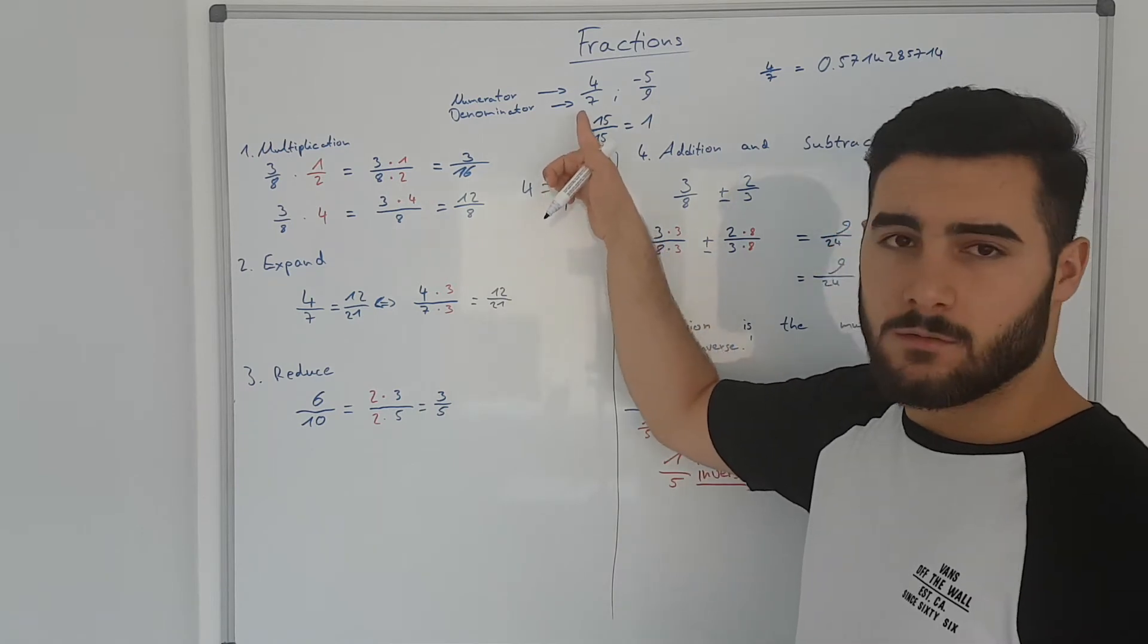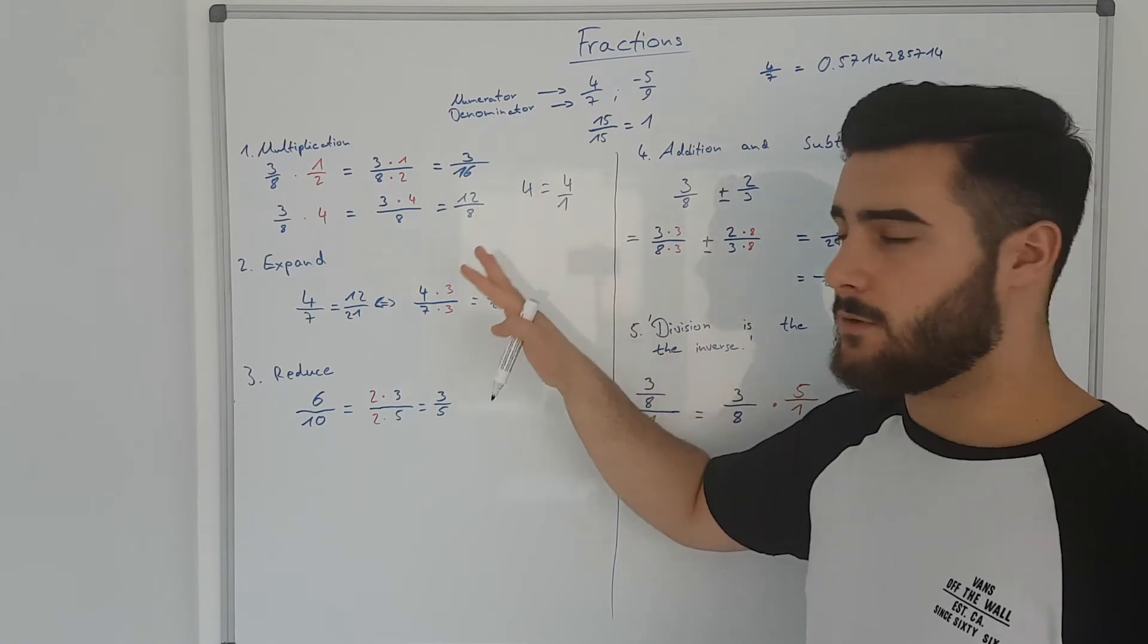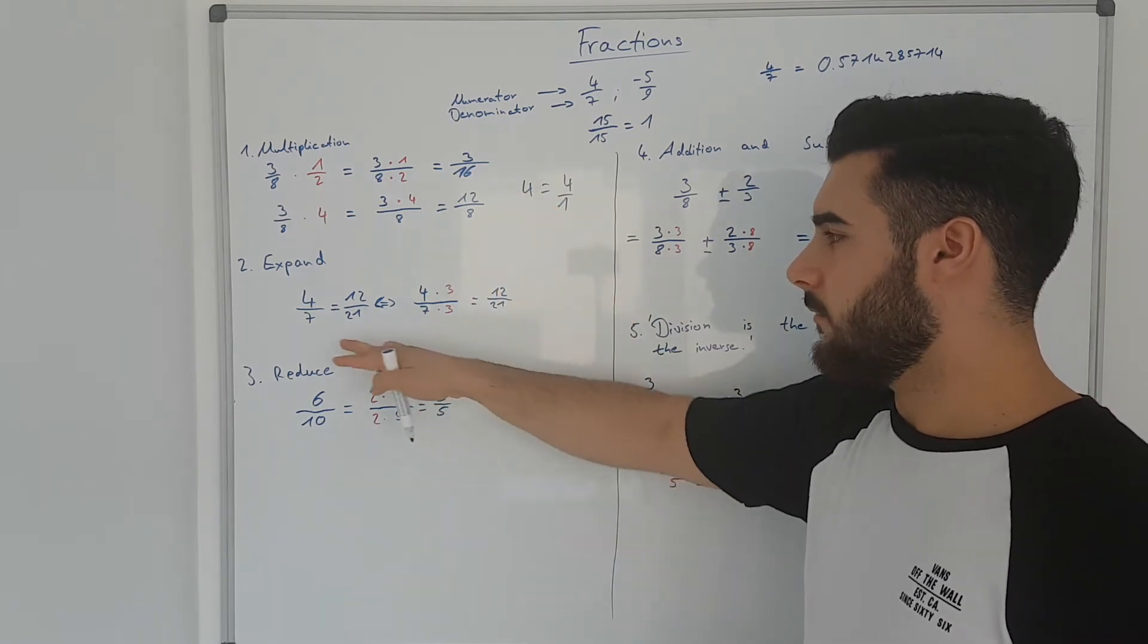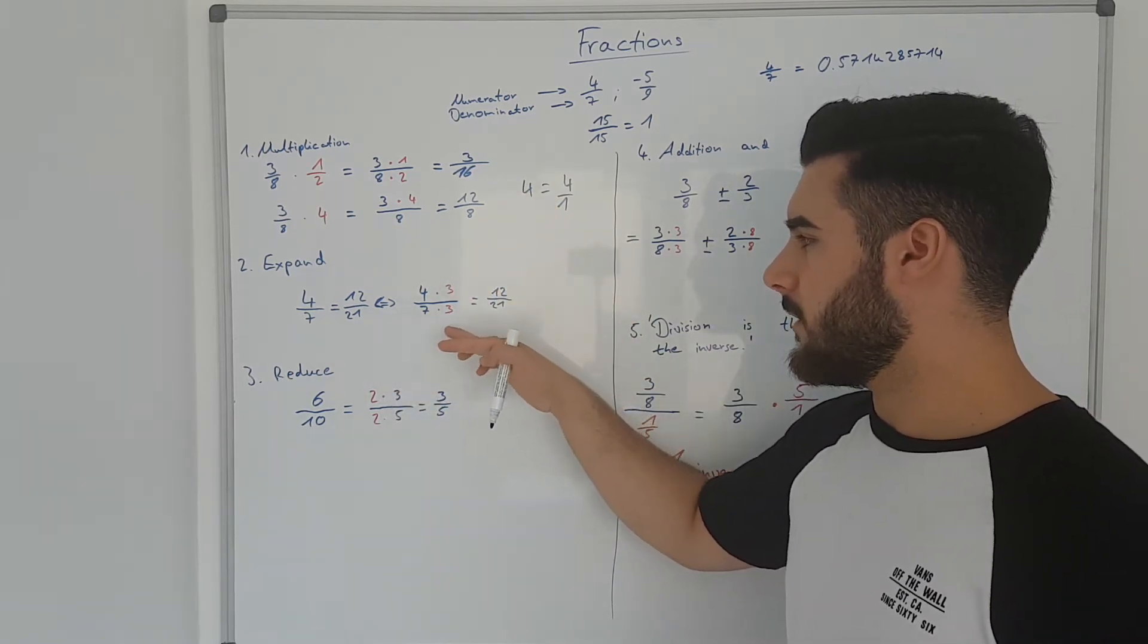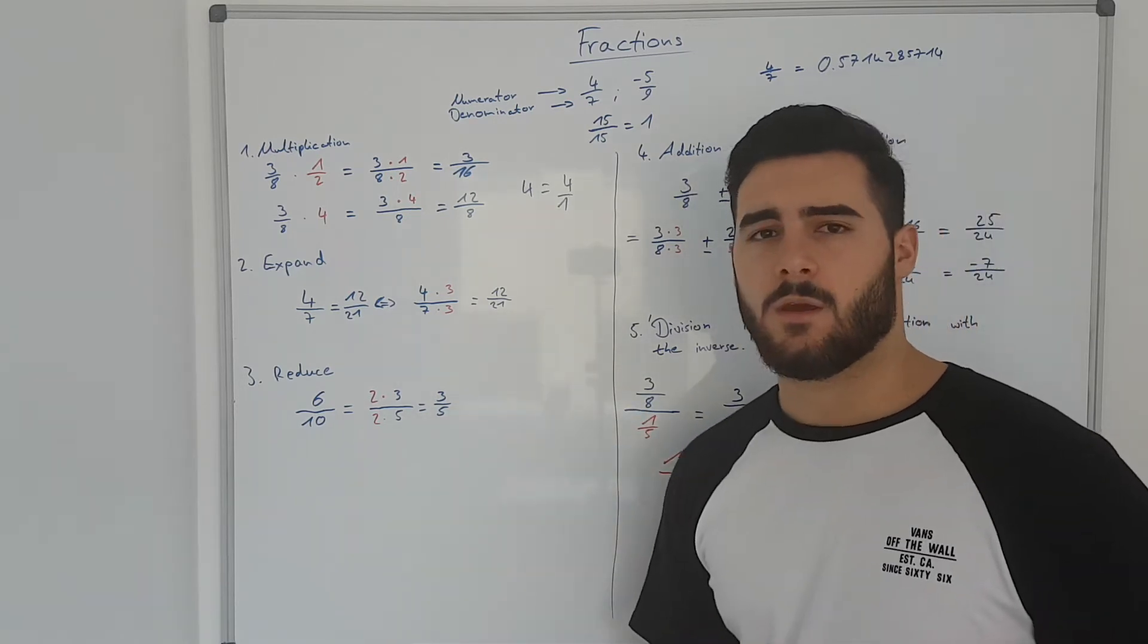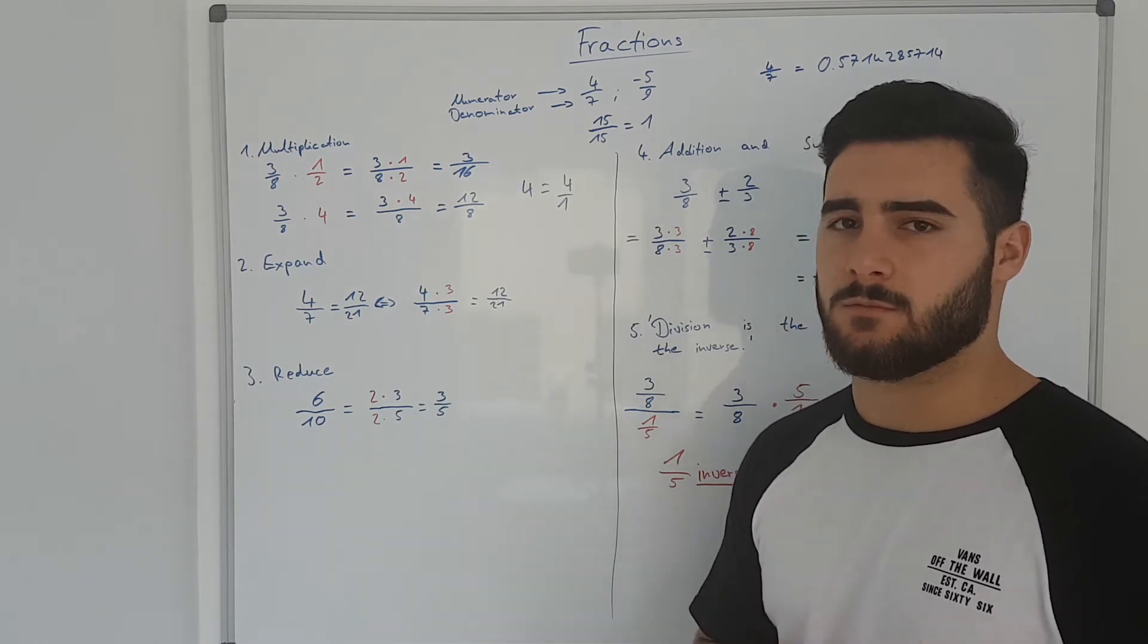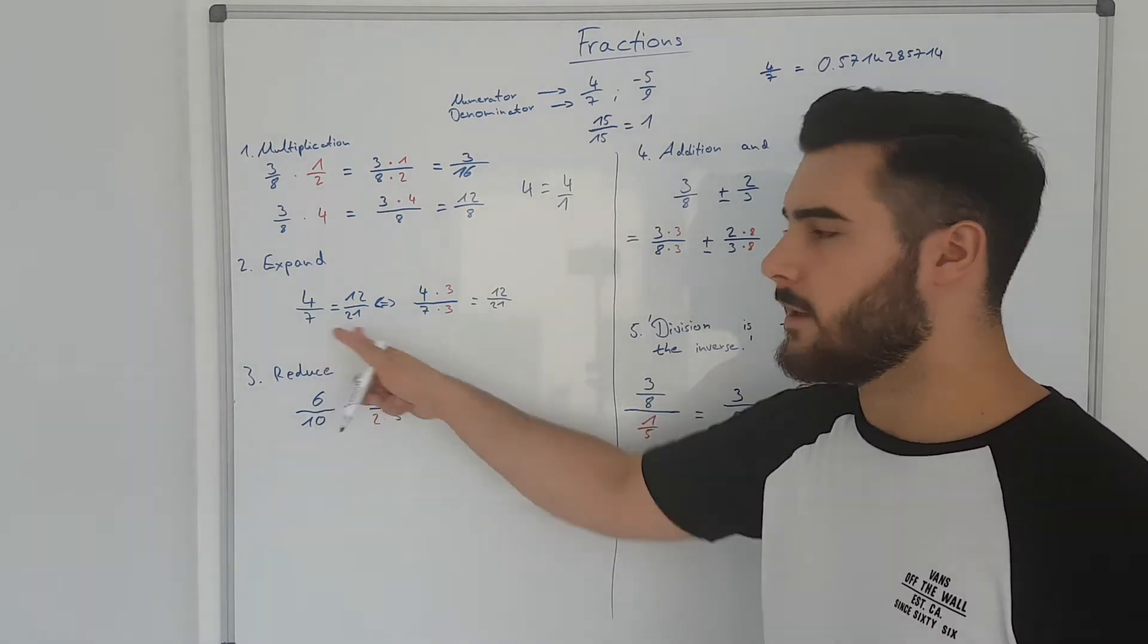We said that if you have the same number in your numerator and your denominator, this is always equal to one. So 4 over 7 is just basically expanding with three. And therefore we get a different number, but as a part of something, it stays the same. That means you're not getting more.